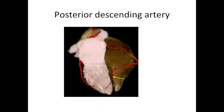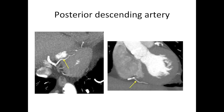The right coronary artery feeds down in between the two ventricles on the bottom of the heart, and this branch is called the posterior descending artery. This is normally supplied by the right coronary artery, but it can be supplied by the right circumflex or even the left anterior descending artery. Here are some pictures of the posterior descending artery running along the bottom surface of the heart, in between the right ventricle and the left ventricle.